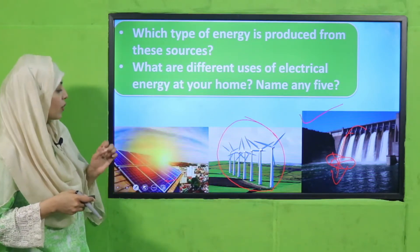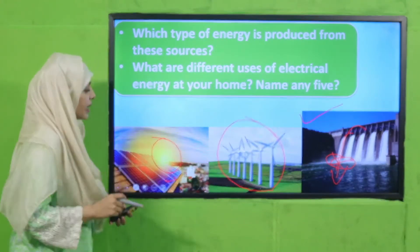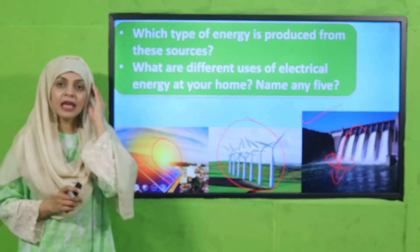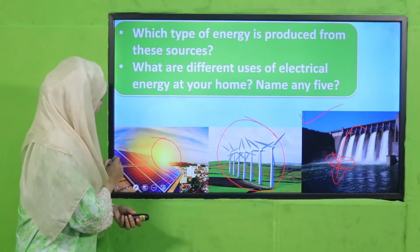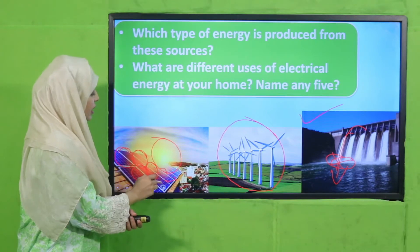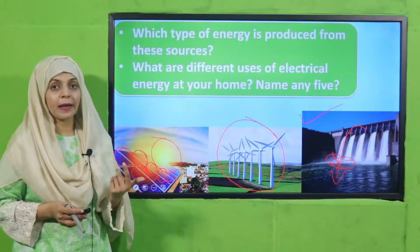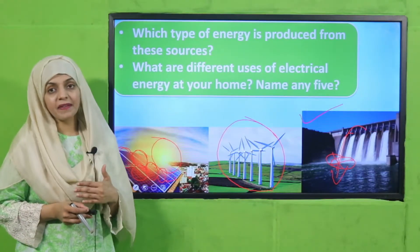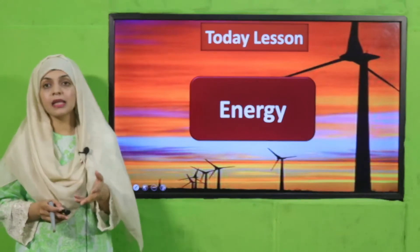Another thing you can see is solar energy. The heat from the sun is trapped inside these panels, and this heat energy is turned into electrical energy. So you can see that one form of energy is changed into another form of energy — and today we will learn about this.